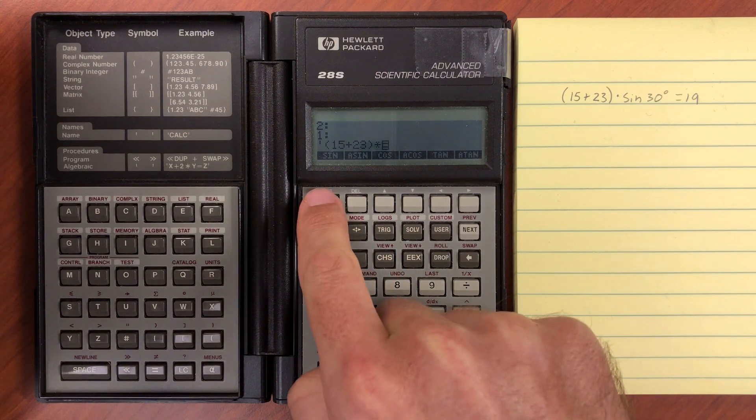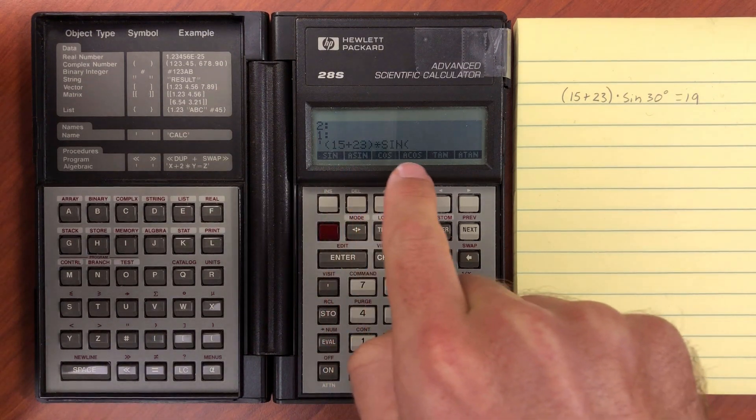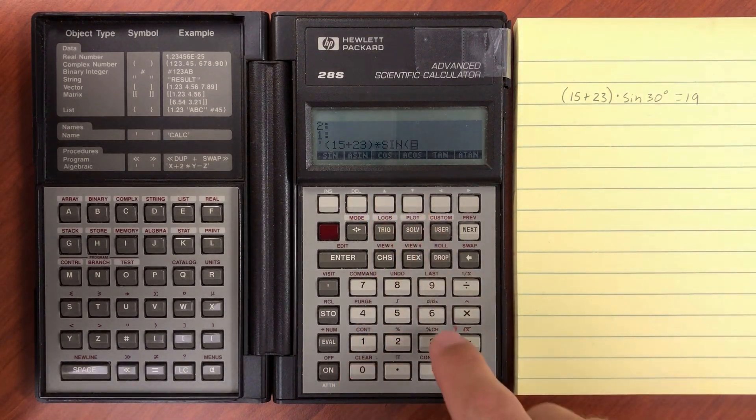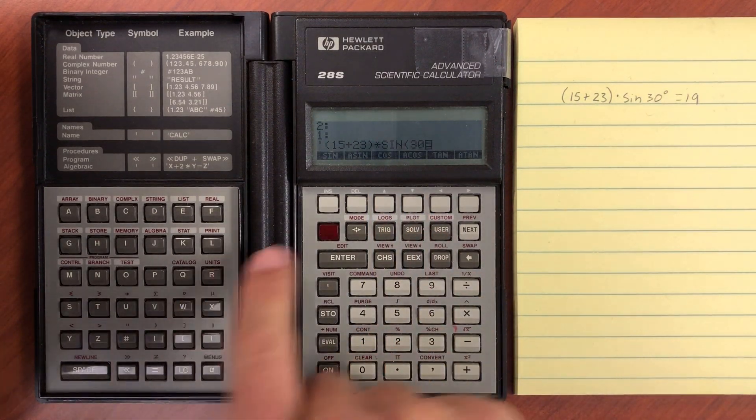Then do times, sine, and again, we are in this delimiter algebraic mode, so it just does the sine and open parenthesis. 30, close parenthesis,